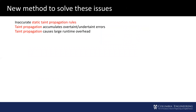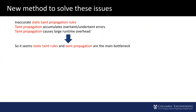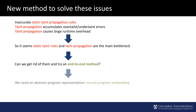We already know that rule-based dynamic taint analysis has three major limitations. The static taint rules and taint propagation are the main bottlenecks. Can we get rid of the static rules or the taint propagation? To do this, we would need an end-to-end method to track information flow. Specifically, it should convert the program into an abstract representation, then perform analysis directly on the taint source and taint sink. Yes, this is possible using neural program embedding.